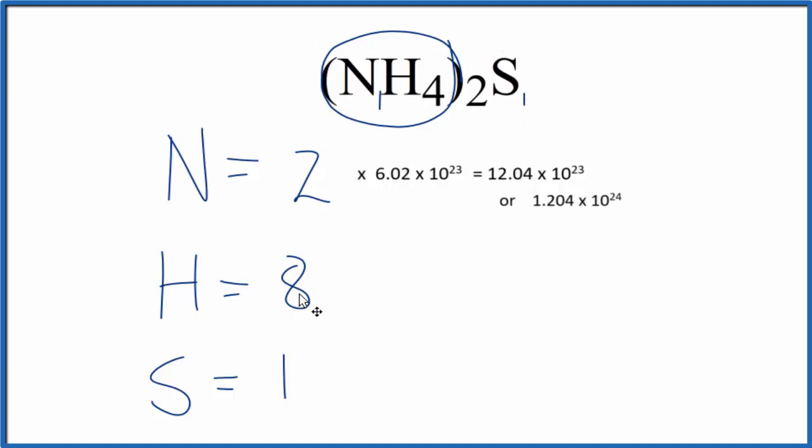For hydrogen, we would multiply the 8 by Avogadro's number, and then for sulfur, that would just be 1 times Avogadro's number. So we'd have 6.02 times 10 to the 23rd sulfur atoms in this NH42S.